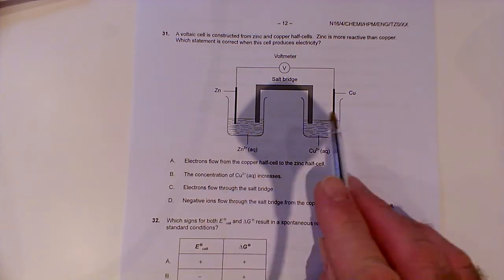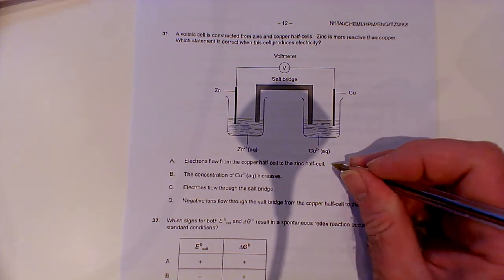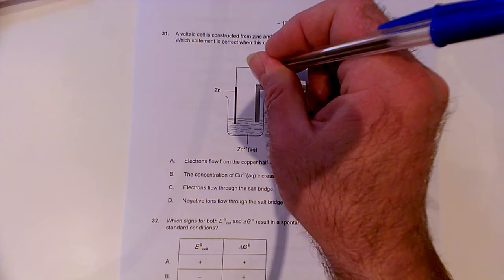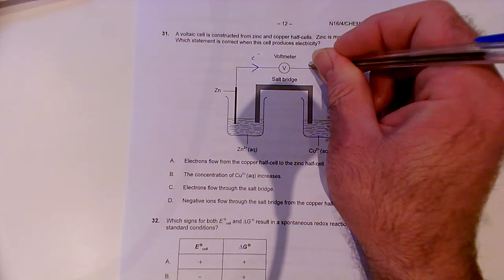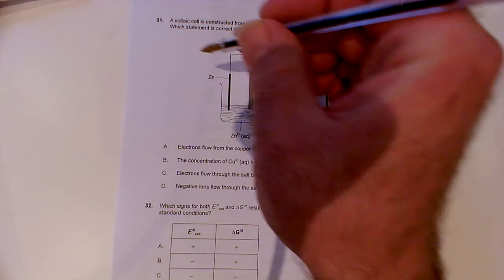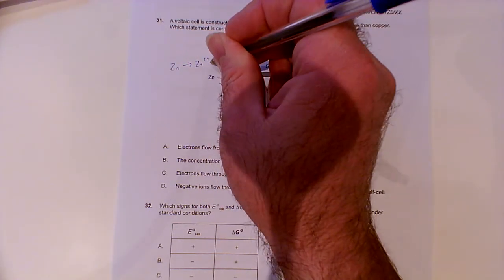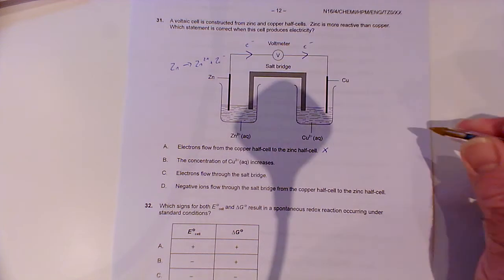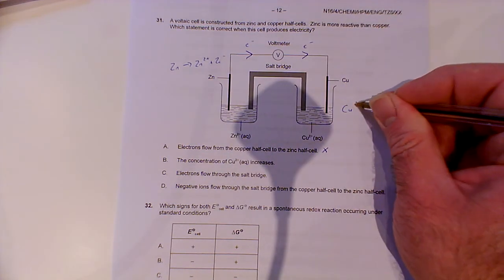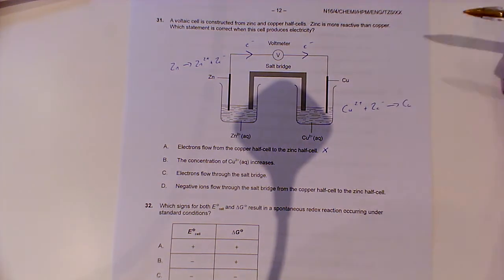We've got the zinc half-cell, the copper half-cell. Electrons flow from the copper half-cell to the zinc half-cell. Well, that's incorrect. They flow from the more reactive metal. So the electrons will be flowing from the zinc half-cell to the copper half-cell. Your zinc rod will be releasing electrons by forming zinc 2+ ions. The electrons will be accepted at the copper electrode by the copper 2+ ions, gaining electrons and then depositing this copper on the surface.